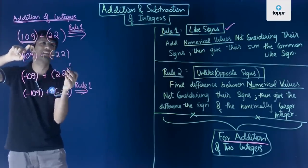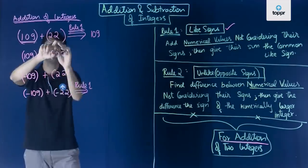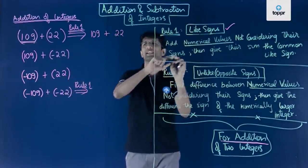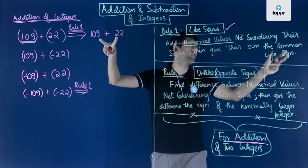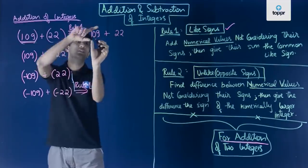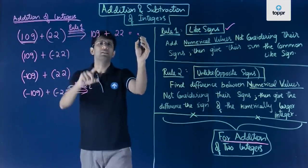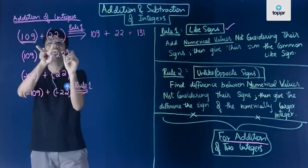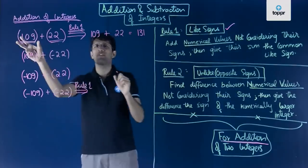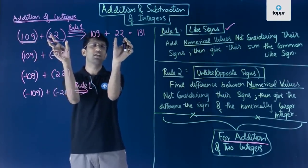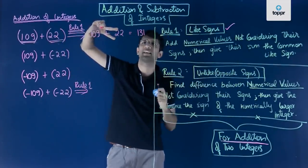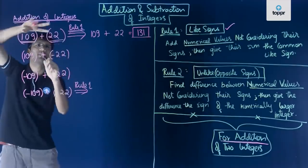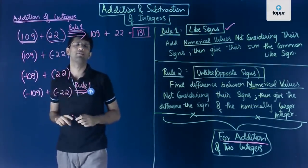The numerical value of 109 is 109 itself, and the numerical value of 22 is 22. So we add these numerical values: 109 + 22 = 131. Then we give this sum their common like sign, which is positive. So the answer is +131, which can also be written simply as 131.